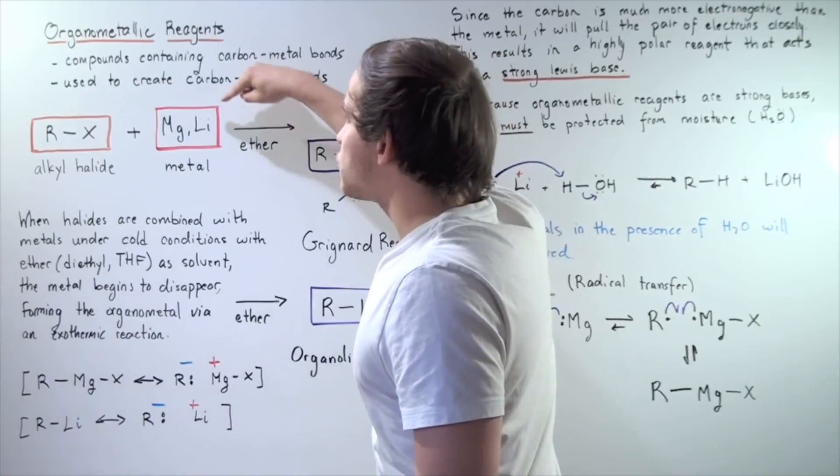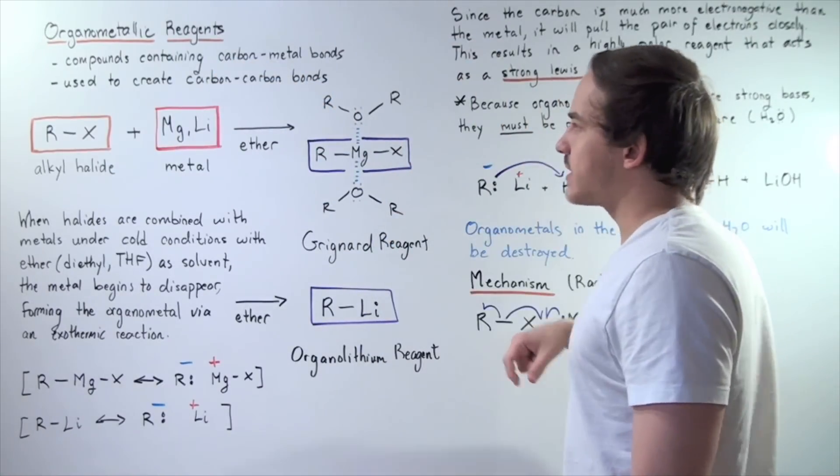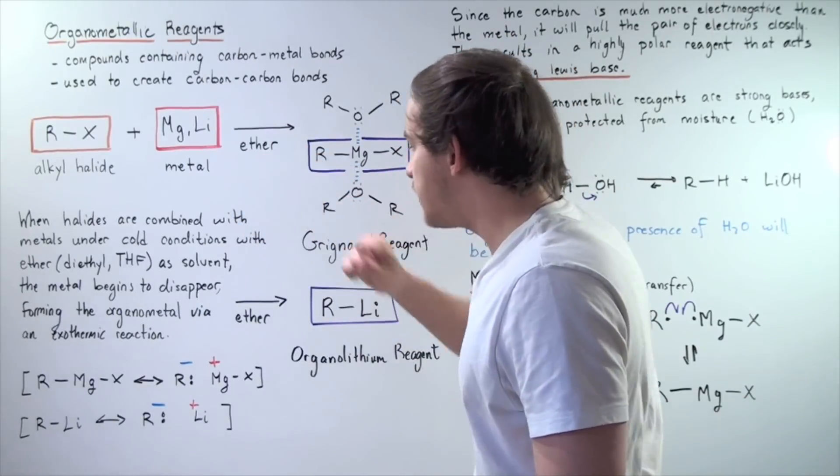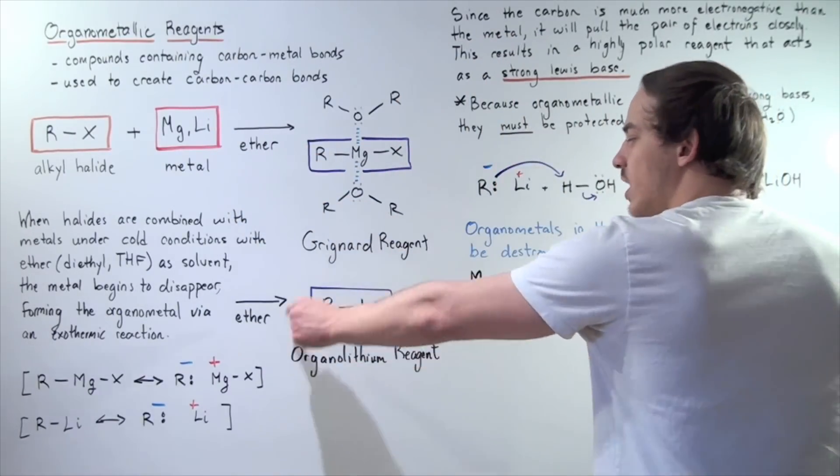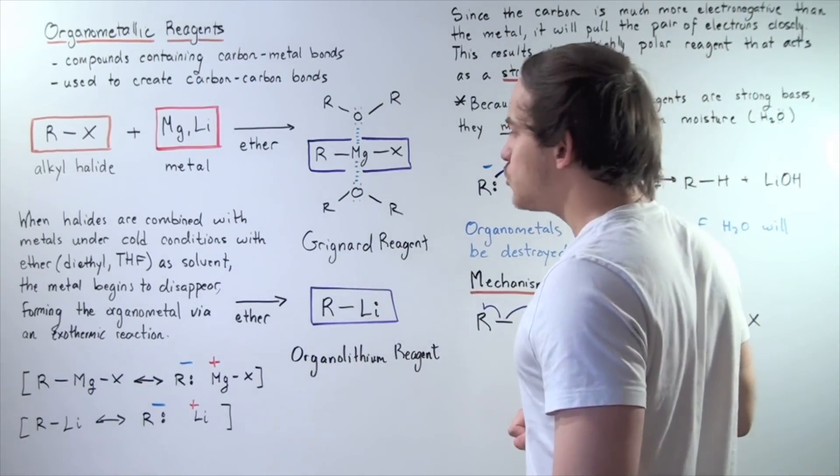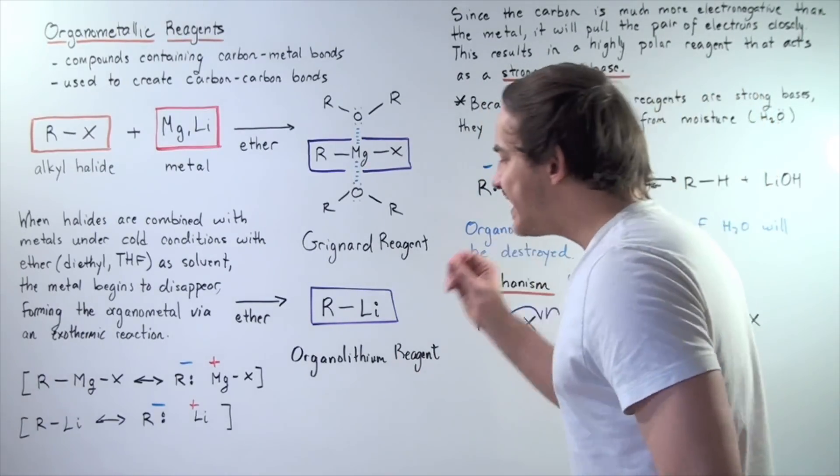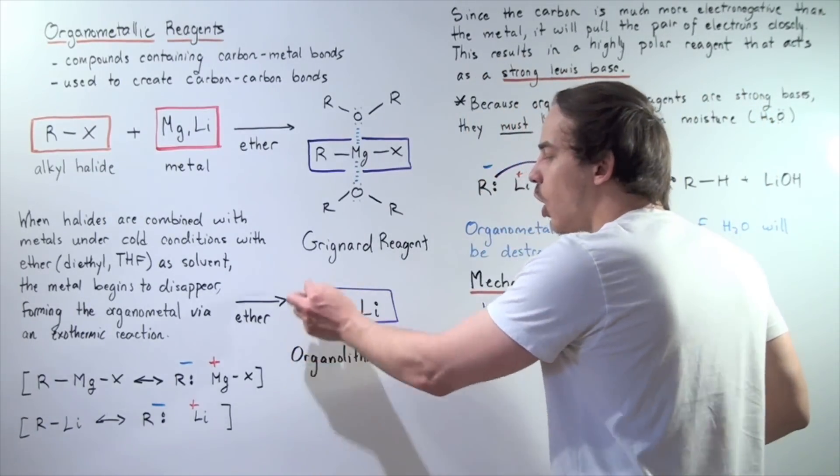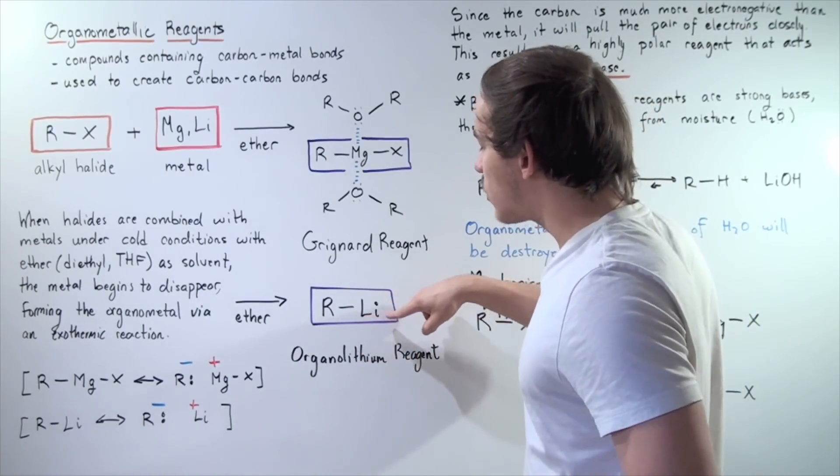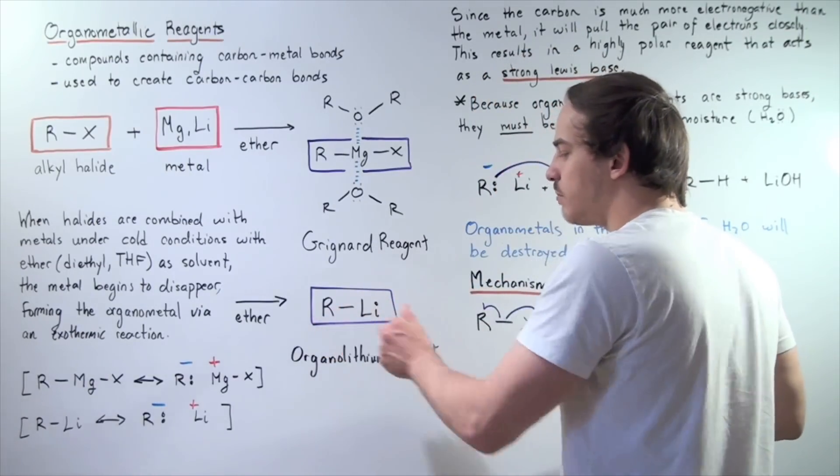Now, what happens when lithium is mixed instead of magnesium? When lithium is mixed, the following organometallic reagents produce known as organolithium reagent. And here, we simply have our R group attached to our lithium. So we have the covalent bond here.